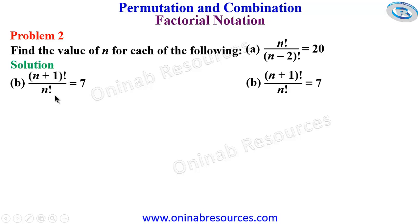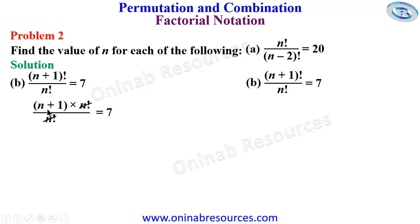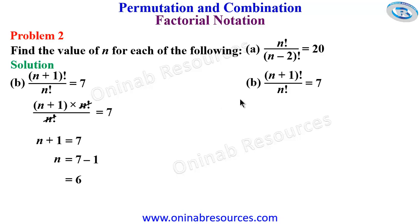For part b, n plus 1 factorial over n factorial equals 7. We expand the numerator as n plus 1 times n factorial over n factorial equals 7. The n factorials cancel, leaving n plus 1 equals 7. Taking 1 to the right-hand side, n equals 7 minus 1 which gives 6. That's the end of the solution to Problem 2, and this is the highest we'll cover in this tutorial. See you in the next video on permutation and combination. Goodbye!